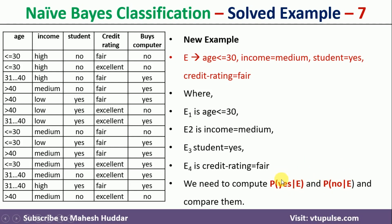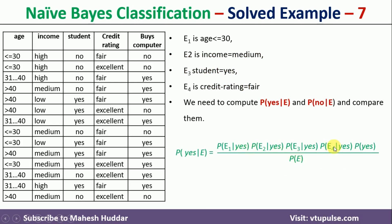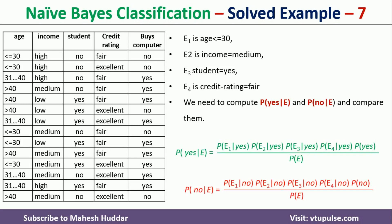To calculate P(yes|E), we use the Naïve Bayes formula: P(E1|yes) × P(E2|yes) × P(E3|yes) × P(E4|yes) × P(yes), divided by P(E). This multiplies the conditional (likelihood) probabilities by the prior probability P(yes). Similarly, to calculate P(no|E), we replace yes with no throughout the same formula.